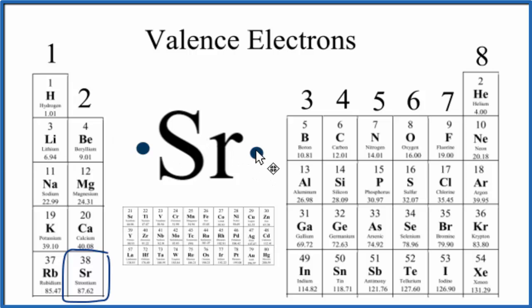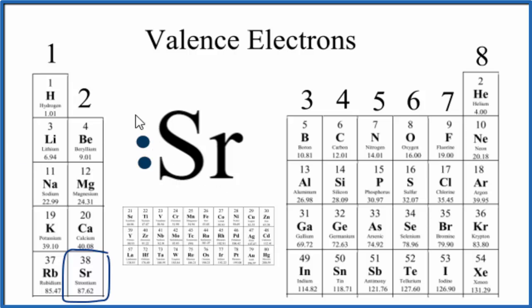Note: sometimes you'll see both of these electrons on the same side, just for the first two. That's to show that these are in the s orbital, that the s orbital is holding two — it's full — and then we'll distribute them around the rest of the orbitals.